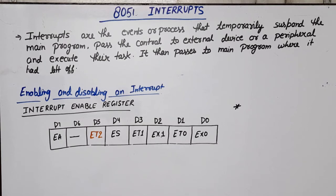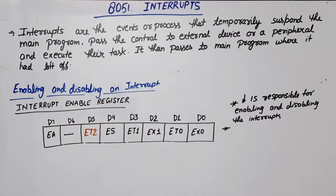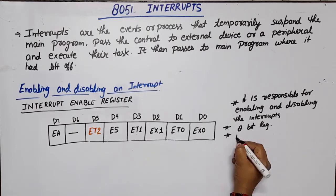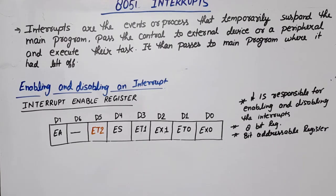Now I am going to discuss how we can enable or disable interrupts — enabling and disabling of interrupts. This depends on the Interrupt Enable (IE) register. This register controls the enabling and disabling of interrupts. It is an 8-bit, bit-addressable register. A few steps are required to enable or disable interrupts.